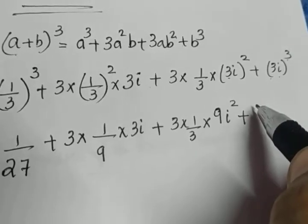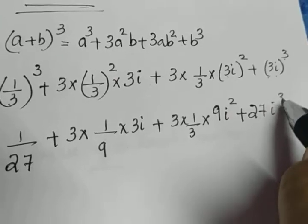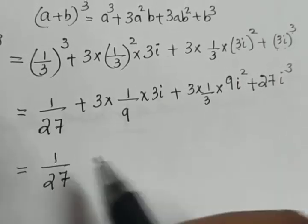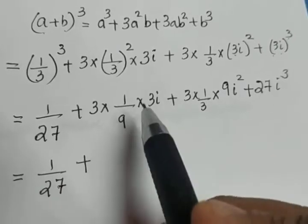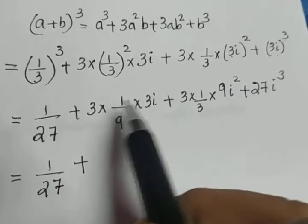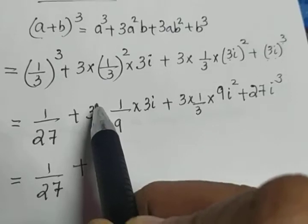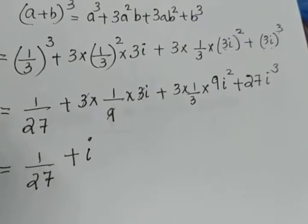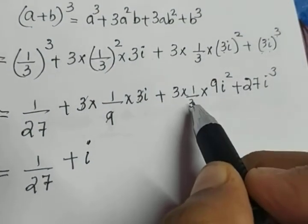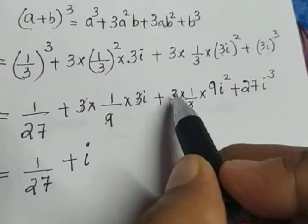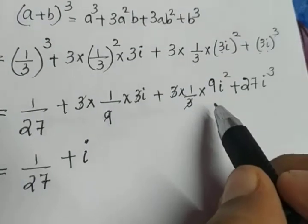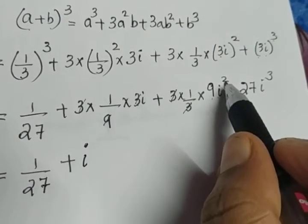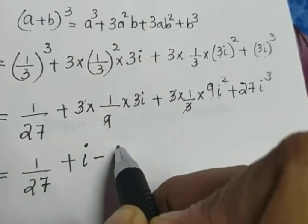3 cubed is 3 into 3 into 3, which is 27i cubed. If cancellation is possible, do it. The first term is 1 by 27. In the second term, the numerator contains 3 into 3, which is 9. That 9 gets cancelled with the denominator 9, so the second term is just i. In the third term, 3 cancels, leaving 9i squared. Since i squared is negative 1, 9i squared will be minus 9.